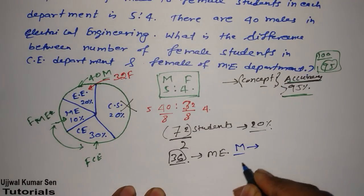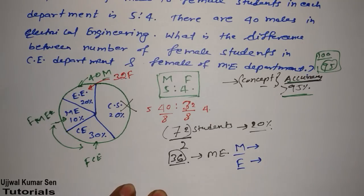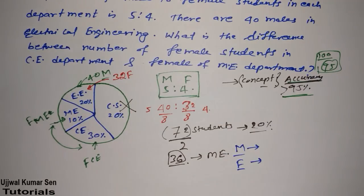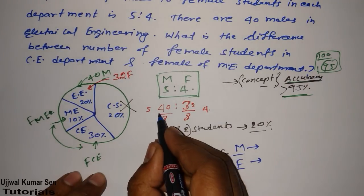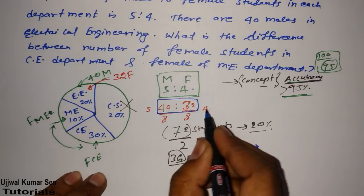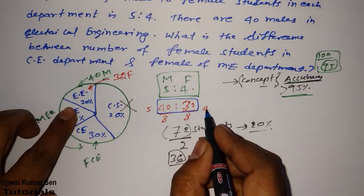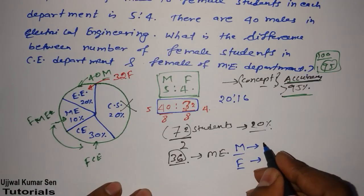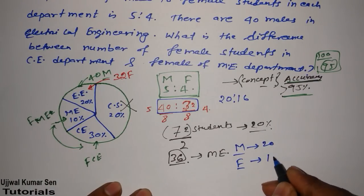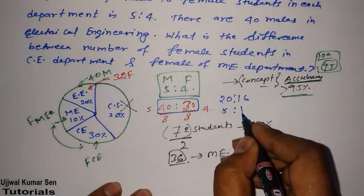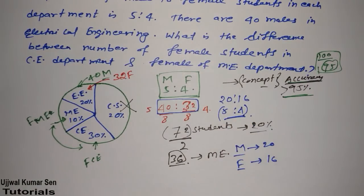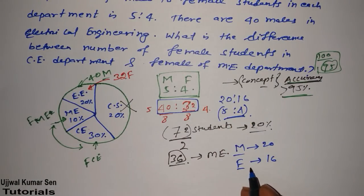Now we find how many are male and how many are female in mechanical engineering. Using the 5 to 4 ratio and comparing with electrical engineering: dividing 36 by 9 gives 4, so males are 20 and females are 16. That gives 20 males to 16 females for the mechanical engineering department.